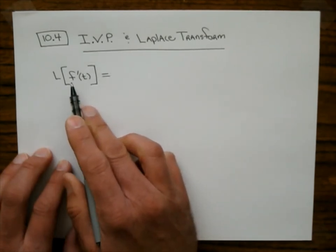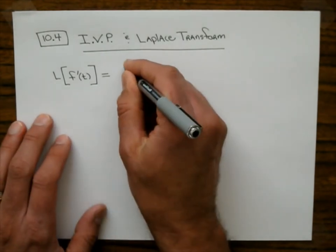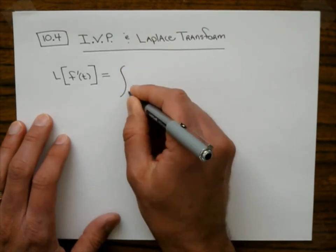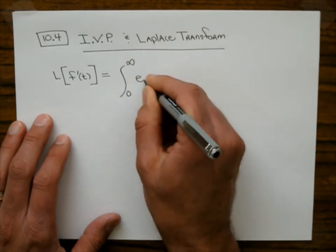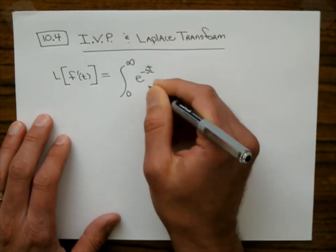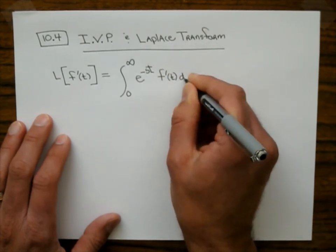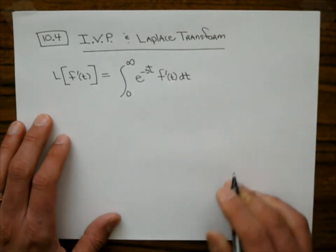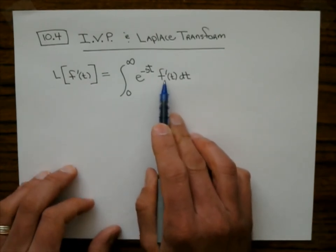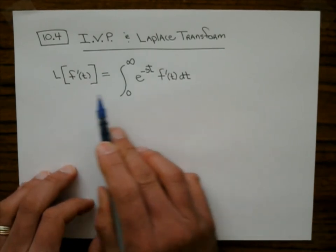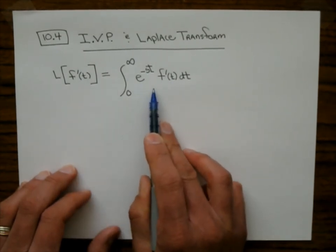So, the Laplace Transform of f prime. That's a weird thing to ask, but we're going to go ahead and do this anyway. You don't have to know how to do this derivation to do your homework or the test, but let's go ahead. We're going back to the definition: this is e to the negative st, and then I'm going to put f prime of t right there.